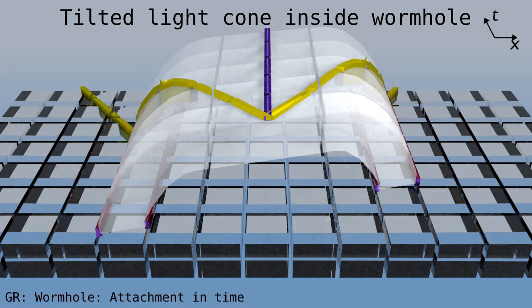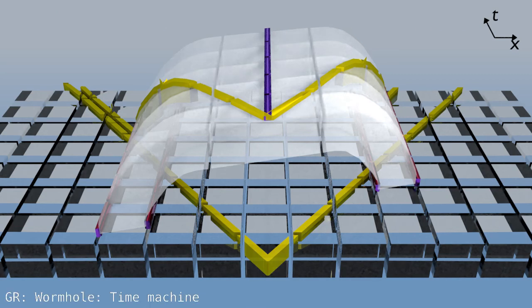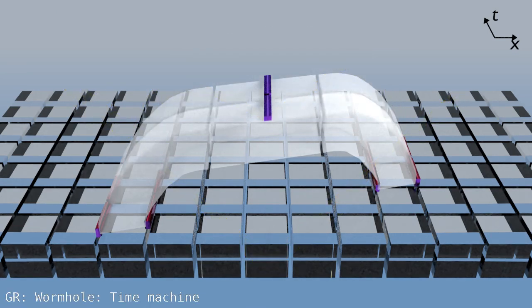But in flat space, the light cone is not tilted.